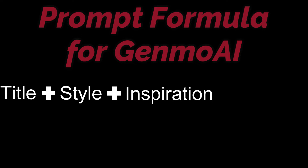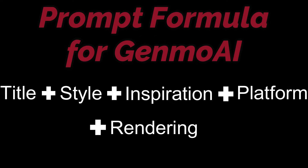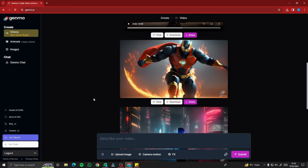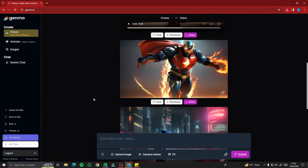Before jumping into text to video generation, let's talk about the prompt formula, which is really important in making text to videos. The prompt formula for creating text to video in Genmo AI consists of five components: first, you type in your title; next, you describe your style; then we have inspiration, platform, and rendering. With these five things, you can create a perfect prompt and produce very cool animations or videos.